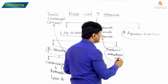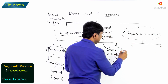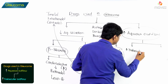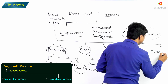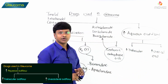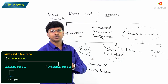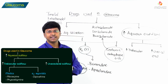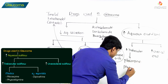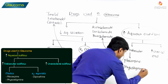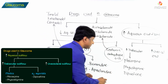The group of drugs which will increase the aqueous outflow — the increase in aqueous humor outflow is by two types: one by increasing the trabecular outflow and the second by increasing the uvioscleral outflow. The drugs which will increase the trabecular outflow include pilocarpine, physostigmine, and dipivefrin.